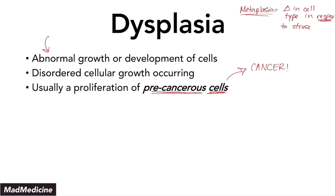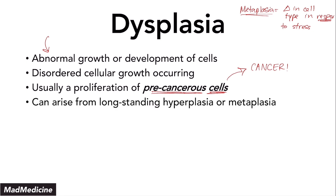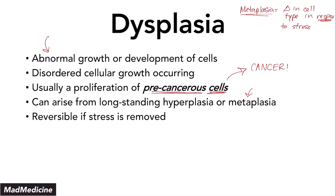How does this happen? Usually, dysplasia occurs because of long-standing hyperplasia or metaplasia. That's why hyperplasia and metaplasia are dangerous — it really has to do with stress. Stress is the biggest contributing factor to dysplasia. If you are constantly placing stress upon an organ, that organ has to compensate or else it will die. We go through hyperplasia first to combat the initial stress, and if that's not effective, we also go through metaplasia. The good news is dysplasia is actually reversible — if you remove the stress, you can get rid of the dysplasia.